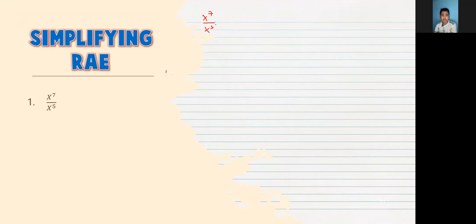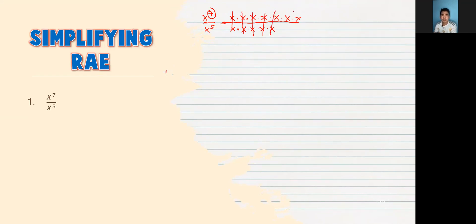So simplifying RAE — the first example is x raised to 7 over x raised to 5. In simplifying fractions, kapag meron tayong nakikitang same numbers sa taas at sa baba, we can cancel it out. Dito sa RAE, ang pag-simplify ay halos similar lang din. Yung x raised to 7 ay pwedeng isulat as x times x... seven times, and x raised to 5 as five x's. Pwede tayong mag-cancel ng same terms. May dalawang x na natira sa taas, sa baba wala na — automatic, pag walang natira, 1. So ang final answer natin ay x squared.